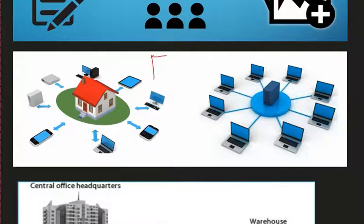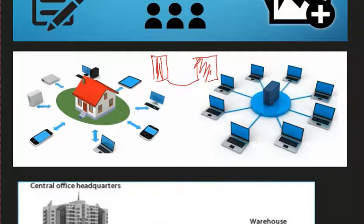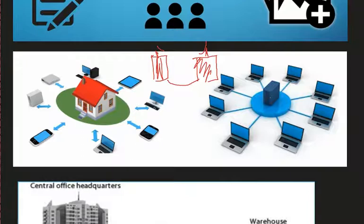Even if your company occupies one building and then creates another building because the first is full, if you connect both buildings — for example using a wireless switch from one building to the other — that could still be a Local Area Network, as long as your company is the one initiating the connection between those areas.